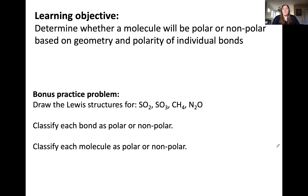In this video we've discussed and showed several examples of how to classify molecules as polar or nonpolar based on their geometry and the polarity of their bonds. For extra practice, try drawing the Lewis structure for four additional molecules, classify each bond as polar or nonpolar, and then classify the molecule as a whole as polar or nonpolar by adding the bond dipoles. Good luck, and I'll see you in the next video.